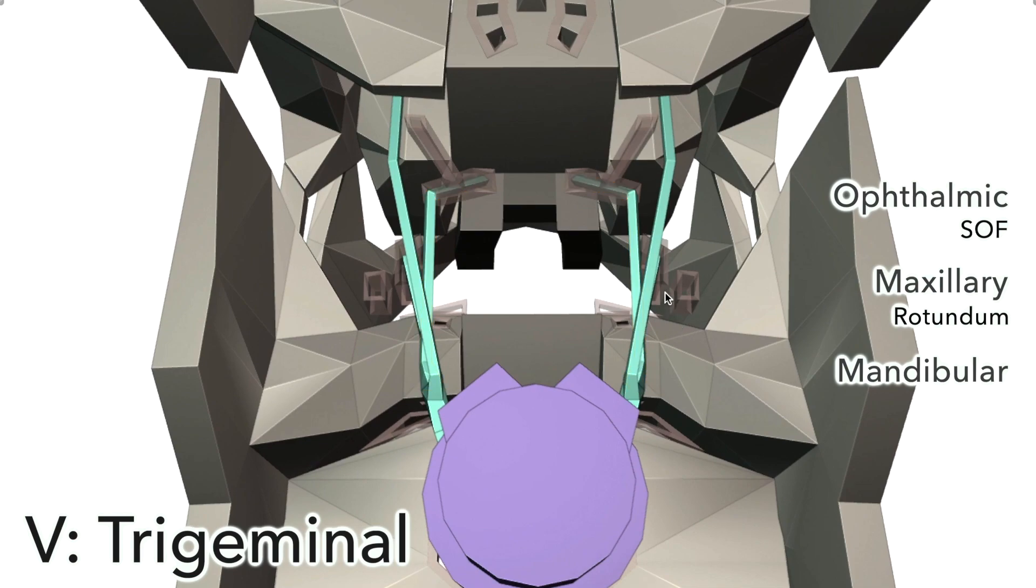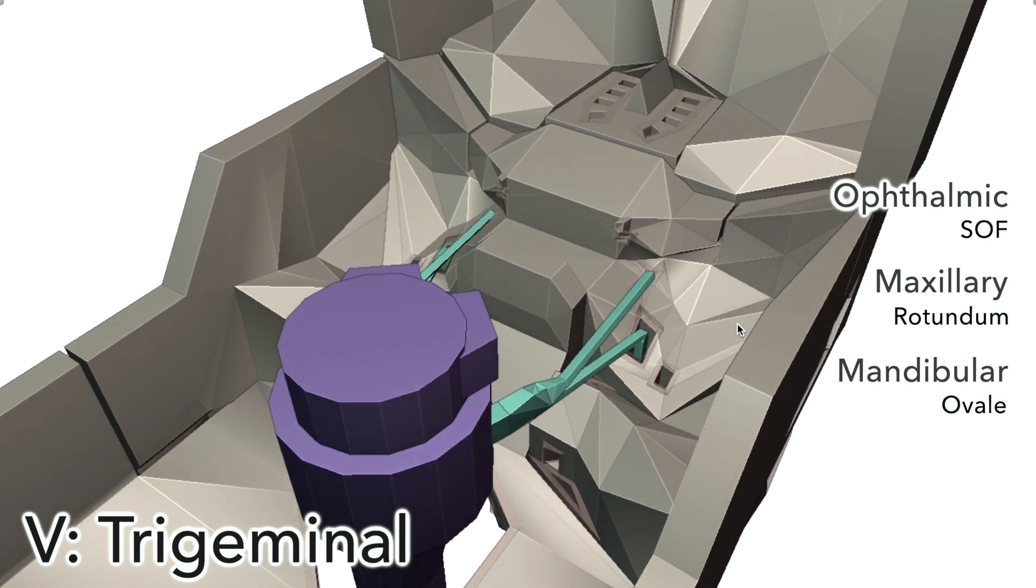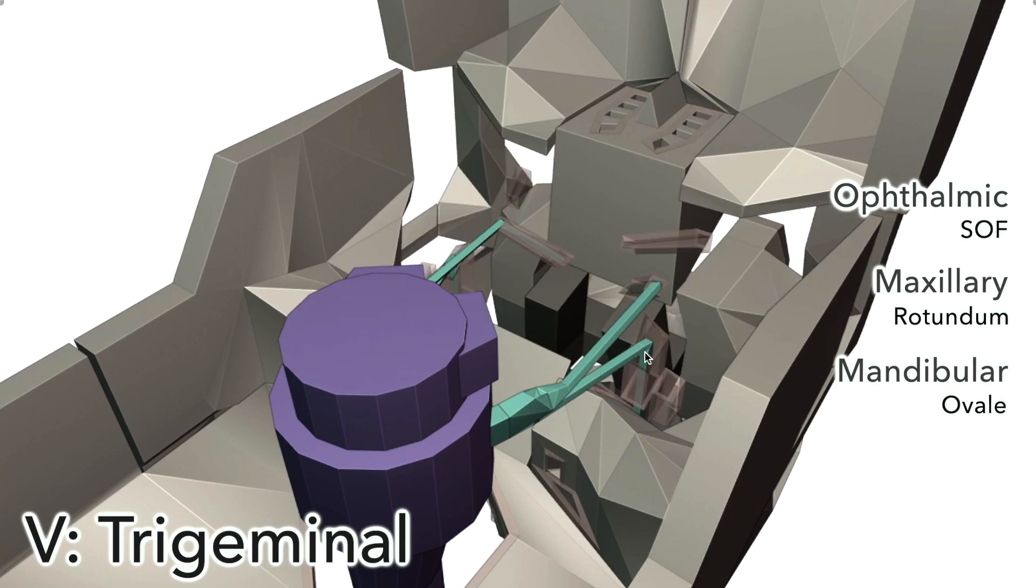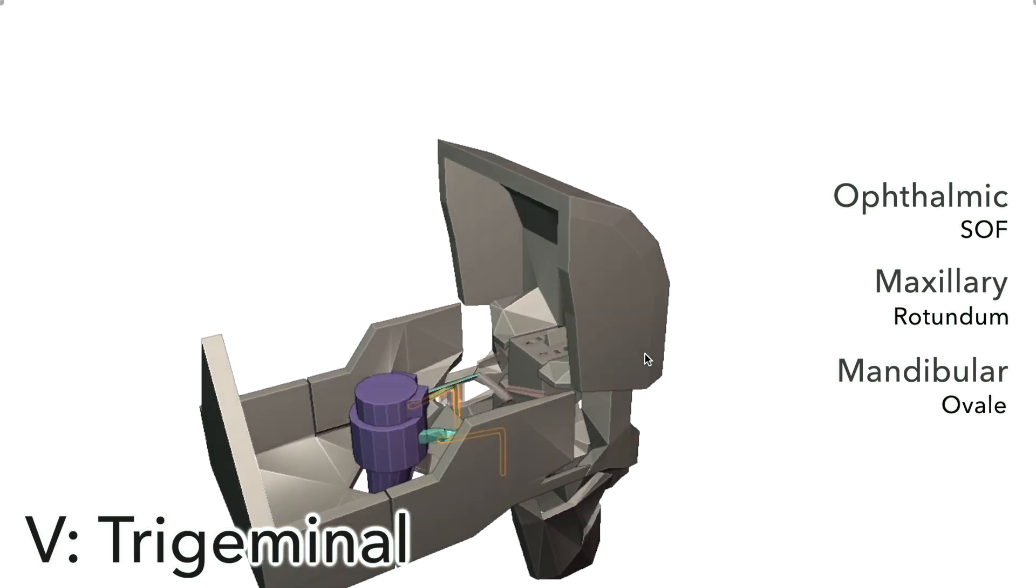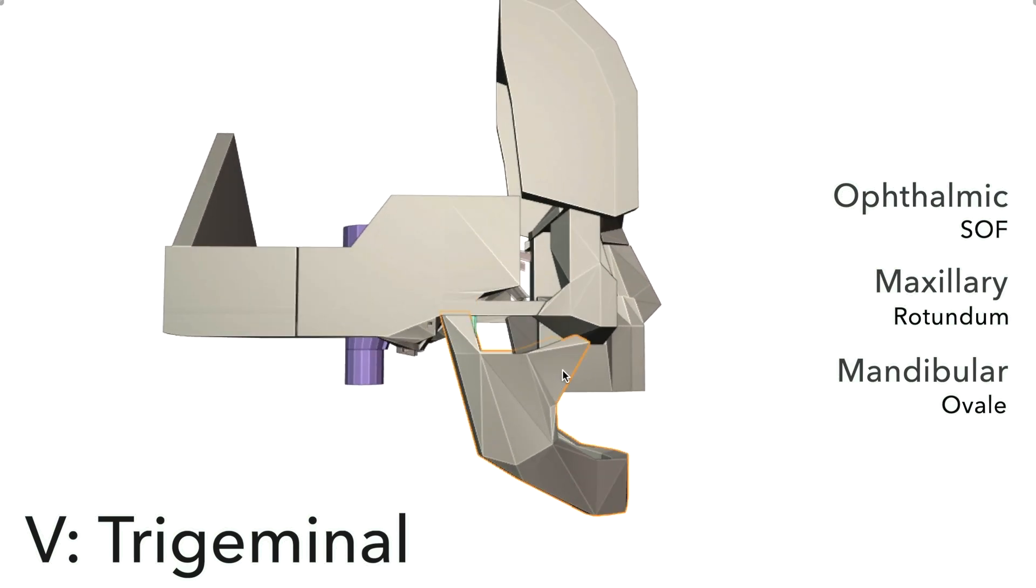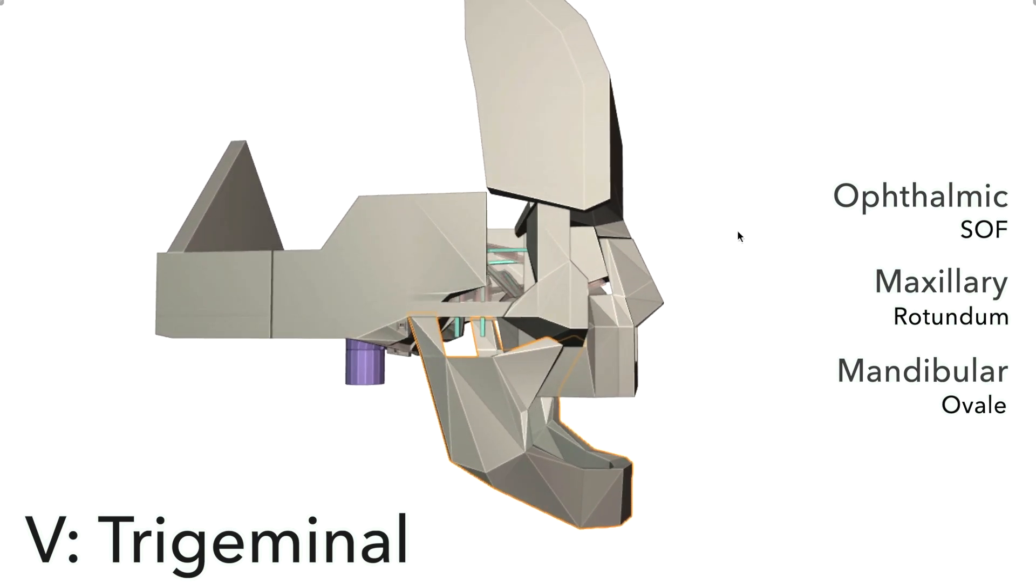The mandibular branch also goes through the sphenoid, but through the foramen ovale, which is the largest of the sphenoid's holes. If we remove the sphenoid again, we can see that the mandibular branch heads straight, inferiorly. It ends up in the mandible, which of course is this bone here. So it ends up in the area of the mandible bone.